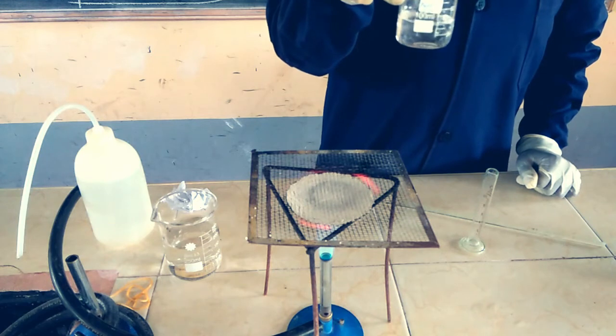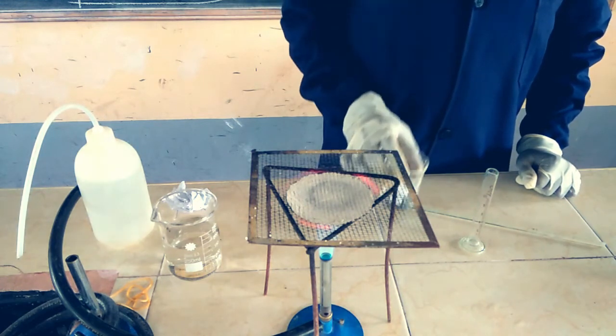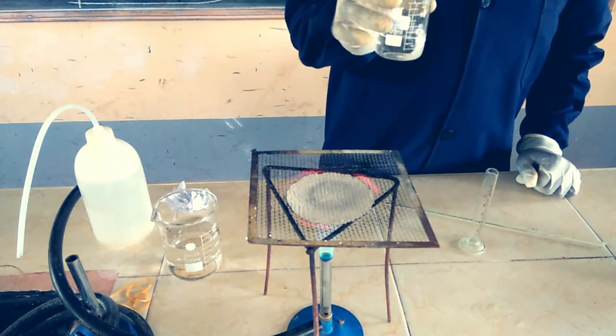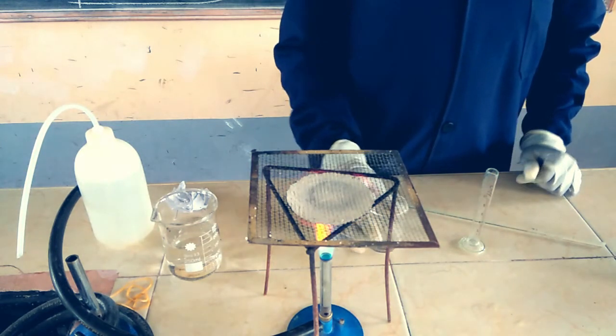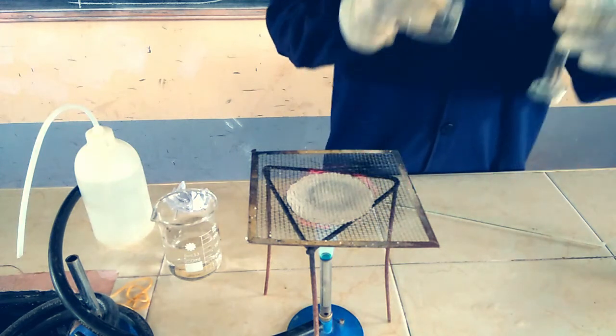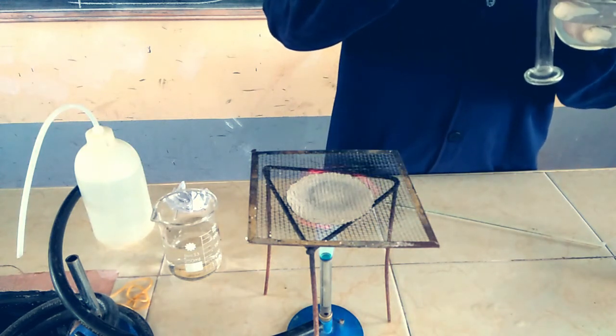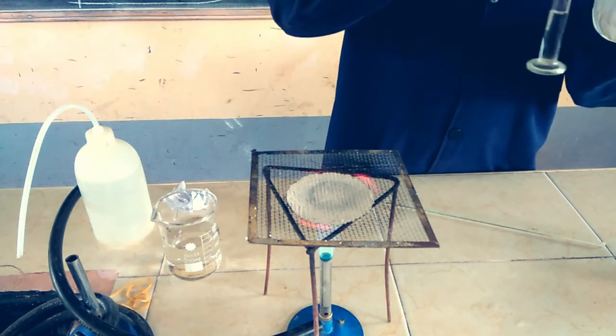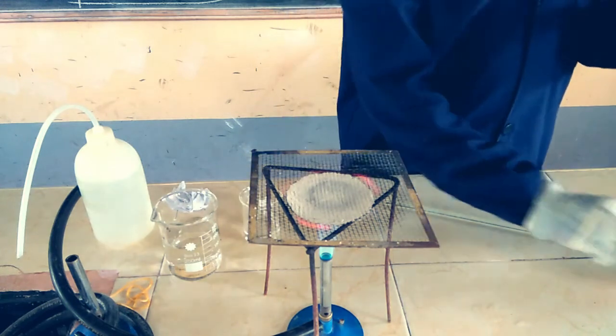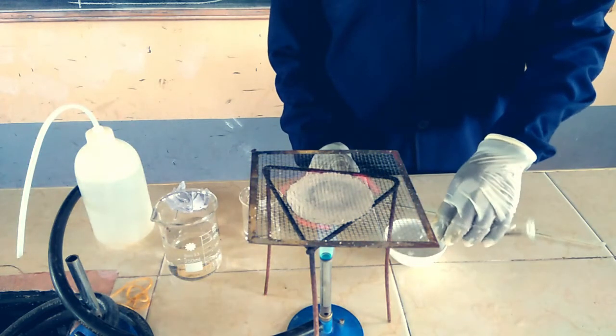So what am I going to do first? I'm going to measure 10 centimeters cubed of the sodium chloride solution. I'm measuring it, then I'm going to transfer it into an evaporating basin.